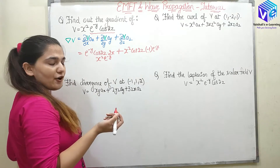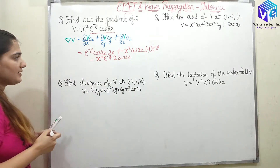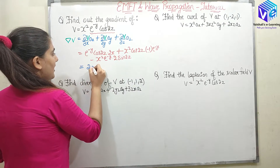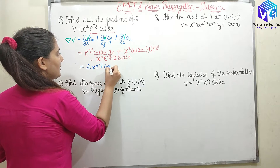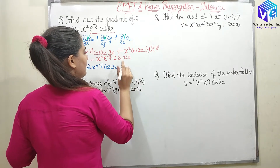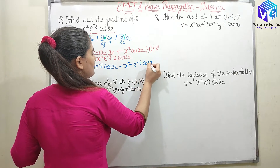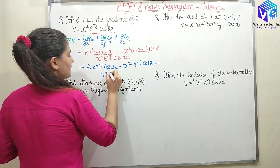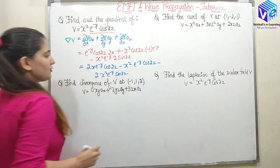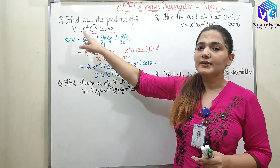For ∂V/∂z, x and y terms are constant, so we have x² e^(-y) and need del/del(z) of cos(2z), which is -2 sin(2z). Combining everything, the gradient of V is: 2x e^(-y) cos(2z) ax minus x² e^(-y) cos(2z) ay minus 2x² e^(-y) sin(2z) az. This is how we find the gradient of the scalar V.